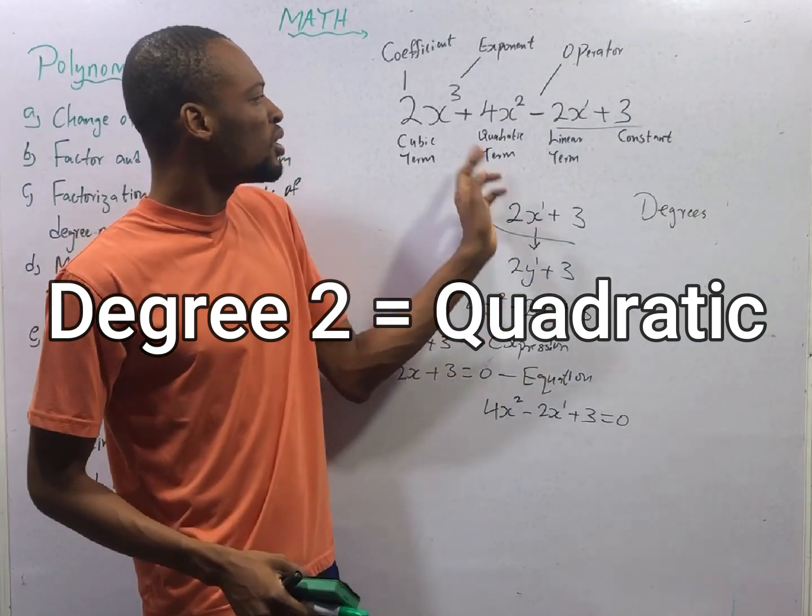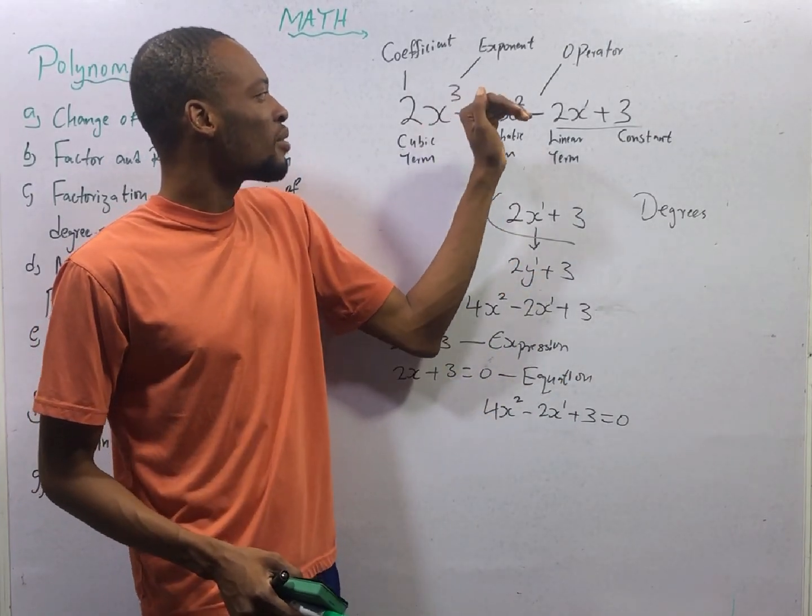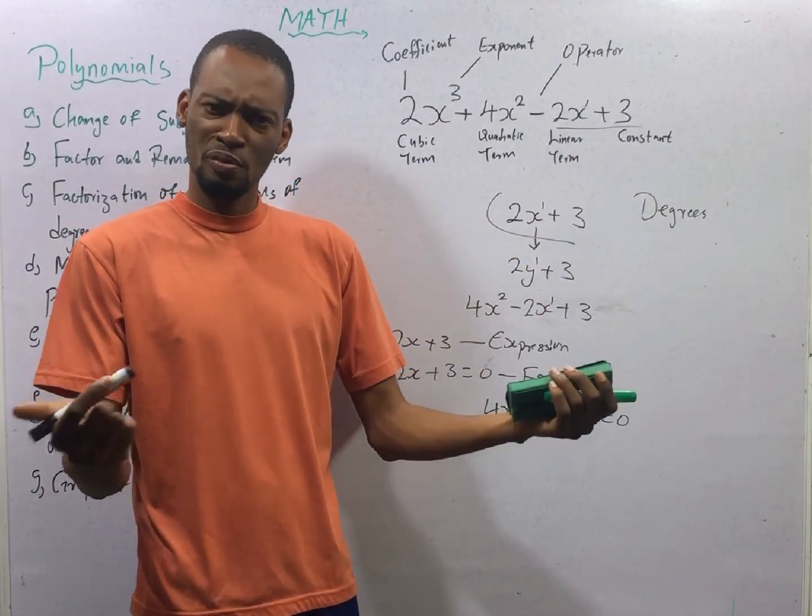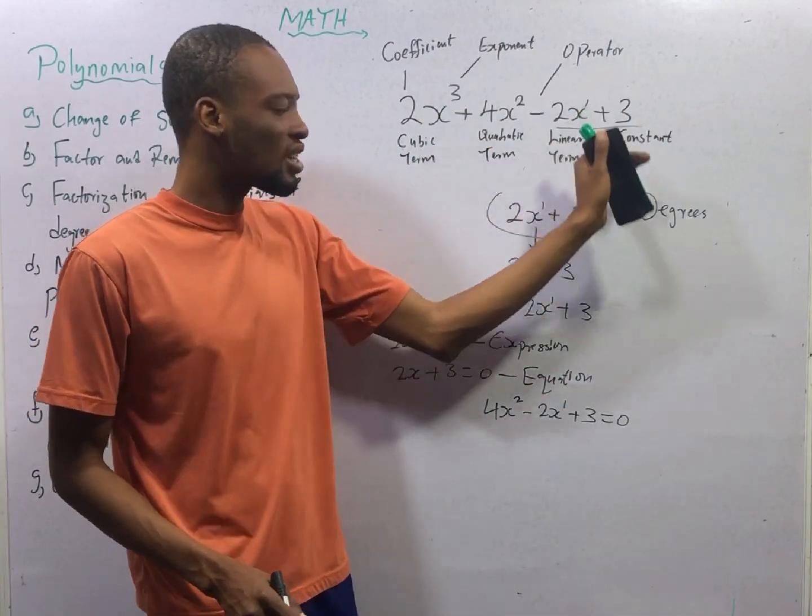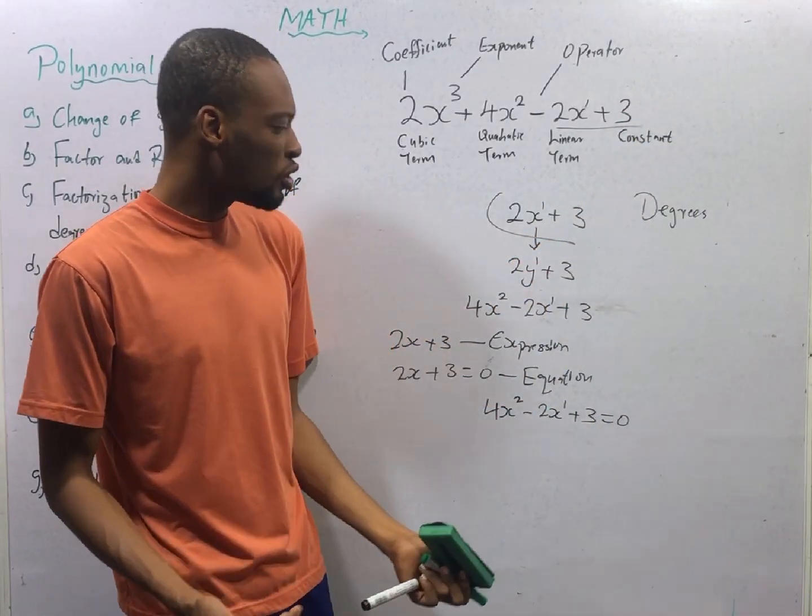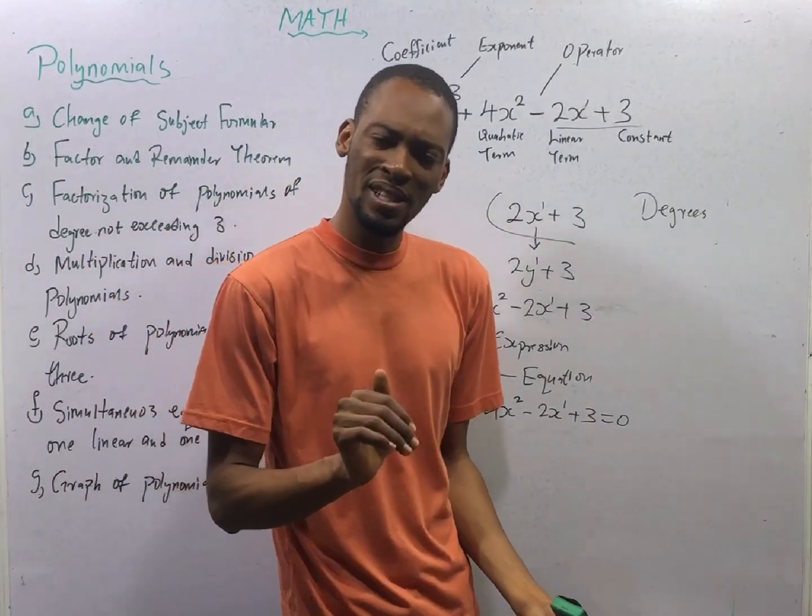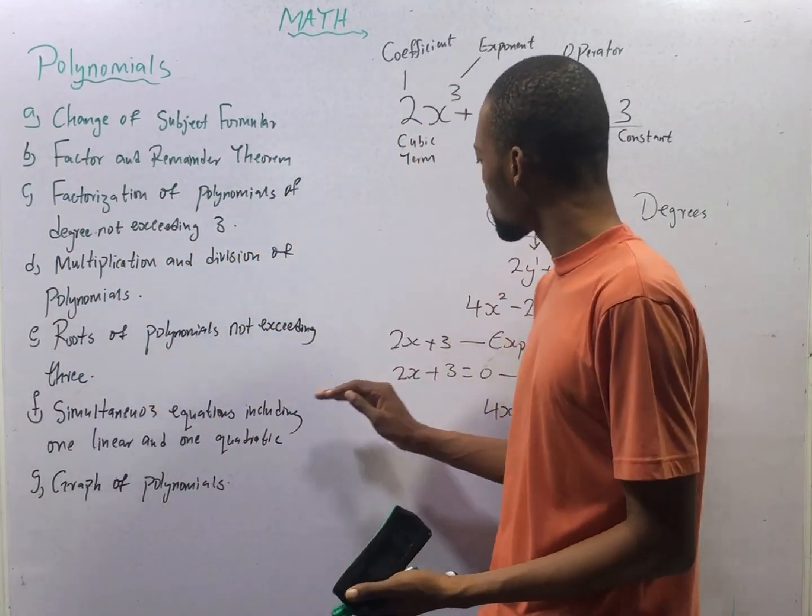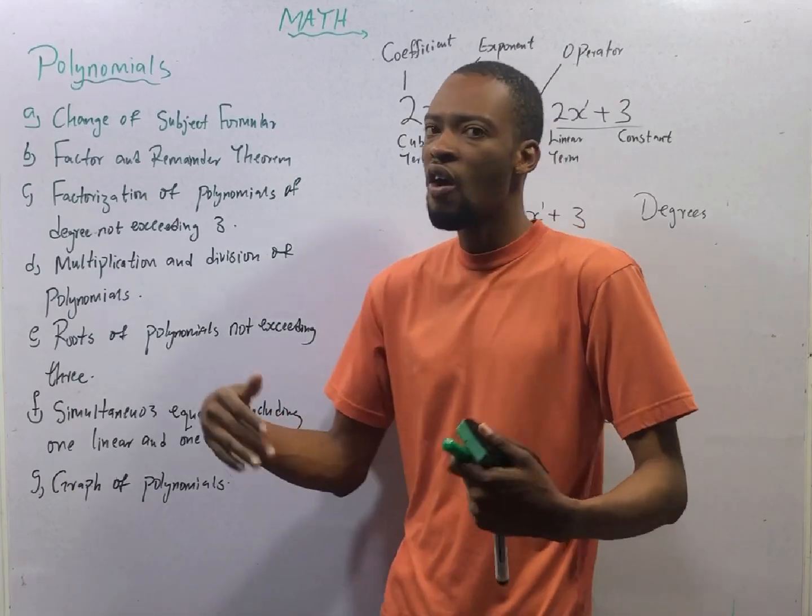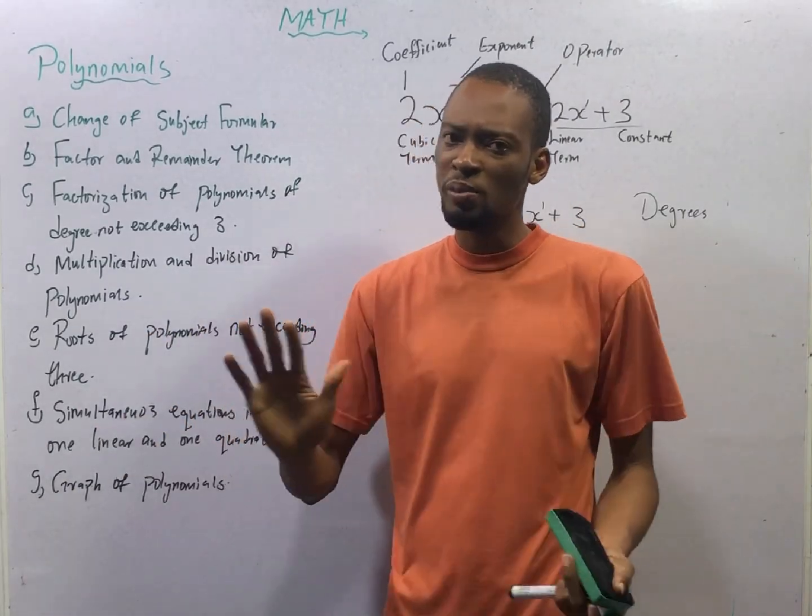Now, a polynomial where the highest power of variable is 3, like in this case, is a cubic polynomial or a cubic expression. If there is equality sign, it becomes a cubic equation. In mathematics generally, any expression with power raised to the power of 2, 3, 4, 5 and 6, they are all referred to as polynomials.